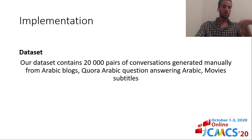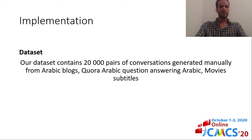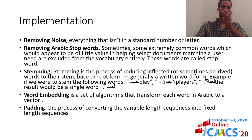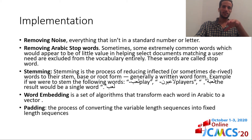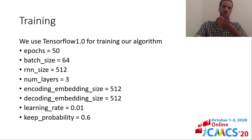Our dataset contains 2,000 pairs of conversations generated manually from Arabic logs, Quora, and movies. For data preparation and cleaning, we use the same steps used in other languages: removing noise, removing Arabic stop words, stemming, word embedding, and padding.